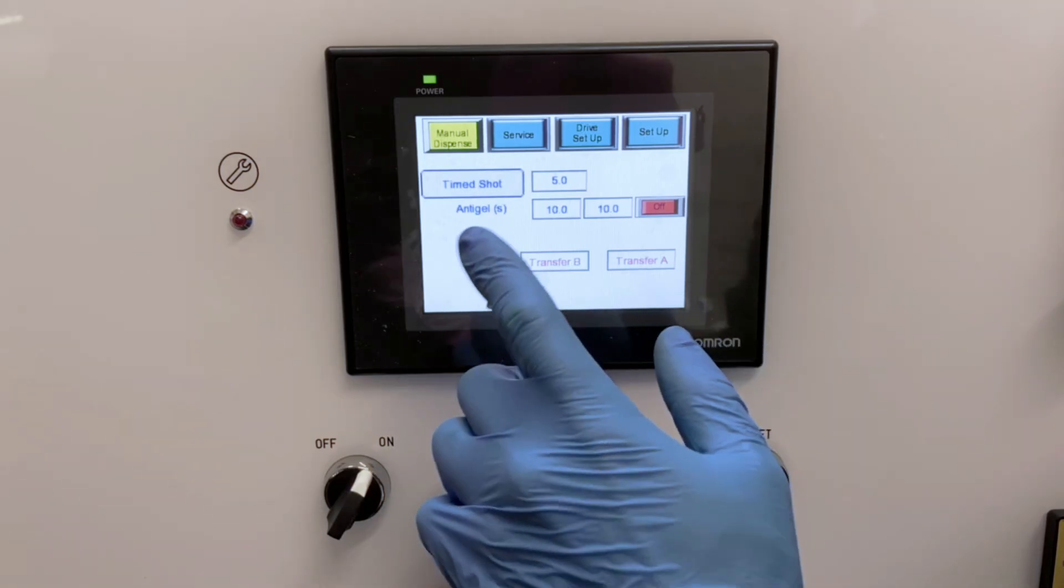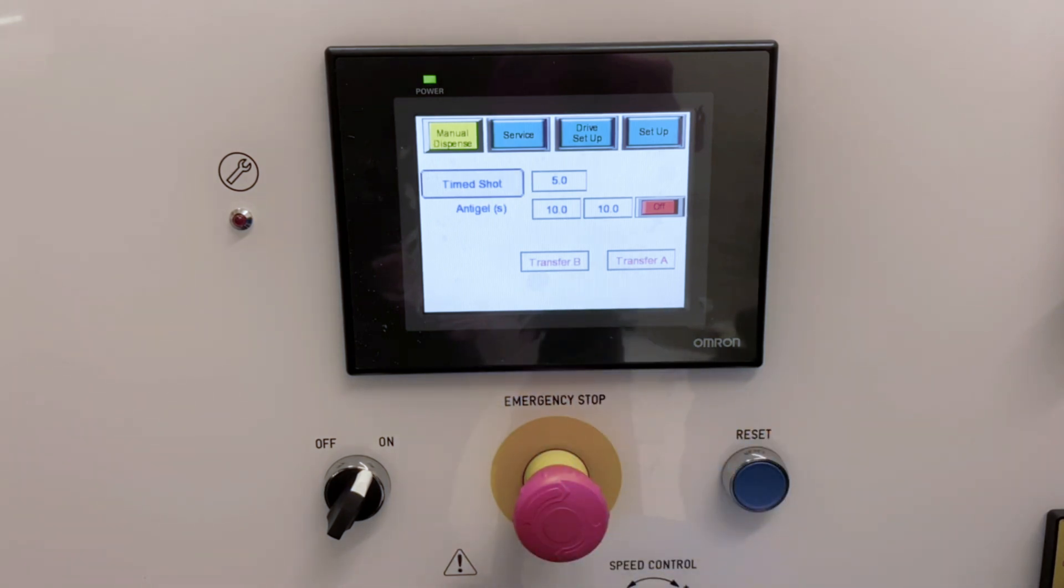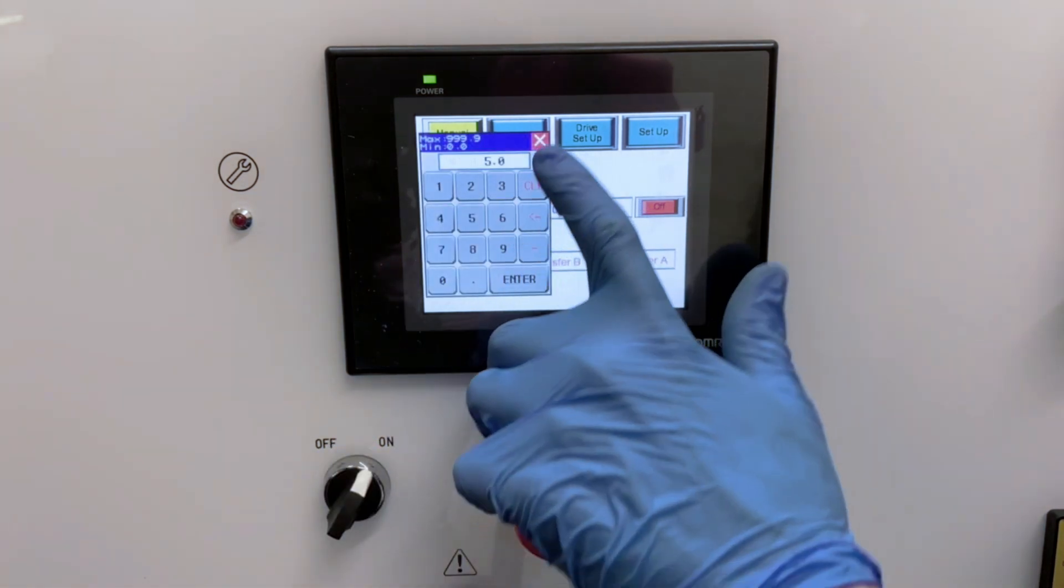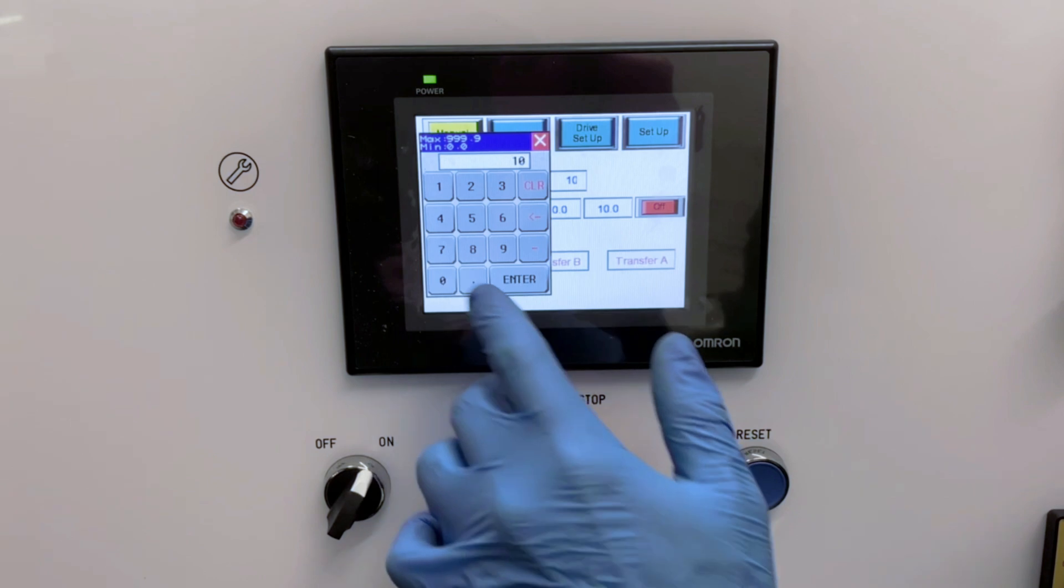You can do a time shot so that you use the potentiometer for the flow rate that's actually being dispensed, and you know that it's set at five seconds, say, or you can change it to 10 seconds.